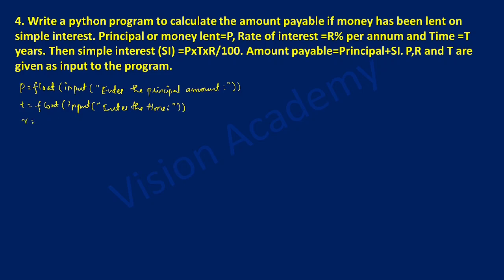Next, R is equal to — again we will take float type of data, and inside the bracket we will use input. In double quotation marks we will ask the user to enter the rate of interest. End the double quotation mark and close the bracket.